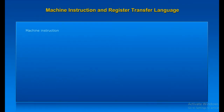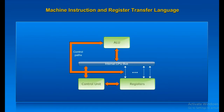We know what machine instructions, instruction sets, and instruction cycles are and what the relationship between them is, as discussed in Unit 2. We also know that all the activities inside the machine are directed by the control unit, which is a part of the CPU or the processor.